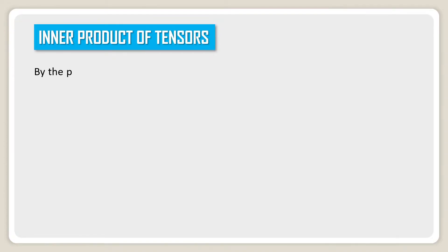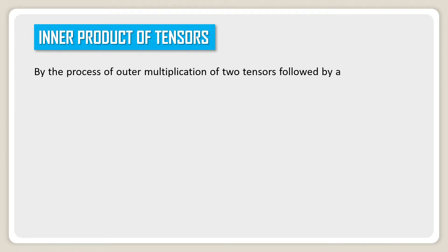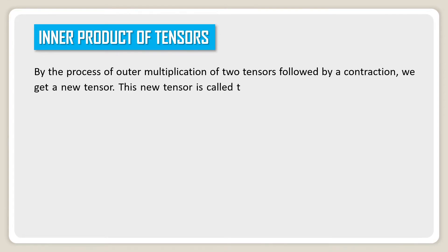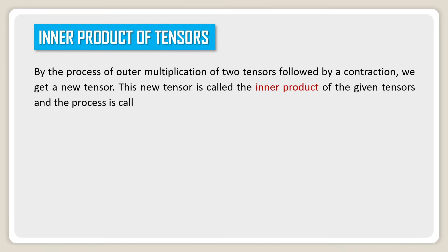Inner product of tensors. By the process of outer multiplication of two tensors followed by a contraction, we get a new tensor. This new tensor is called the inner product of the given tensors, and the process is called inner multiplication.